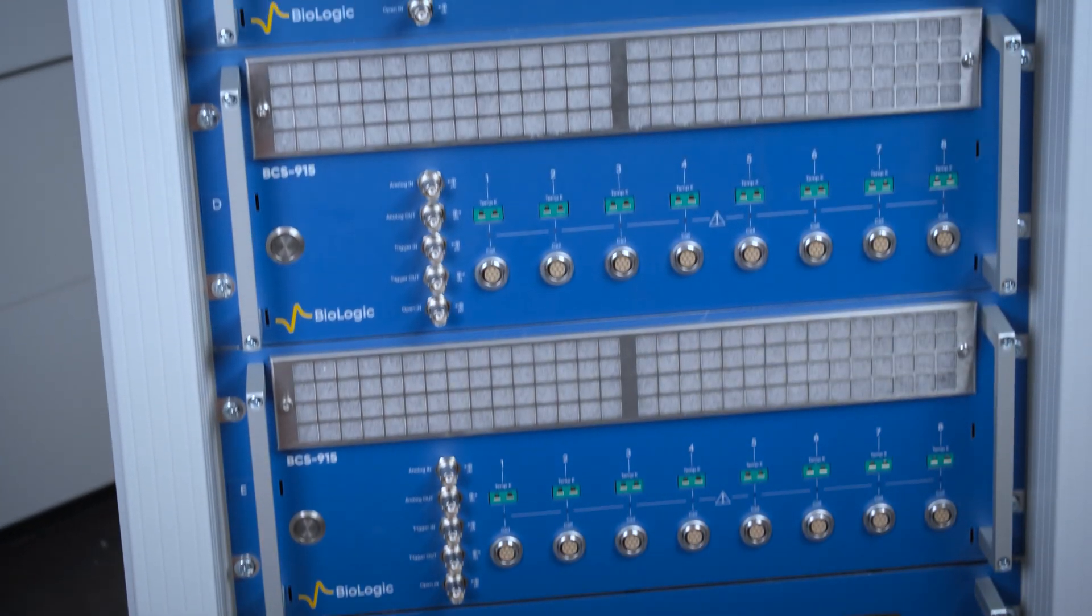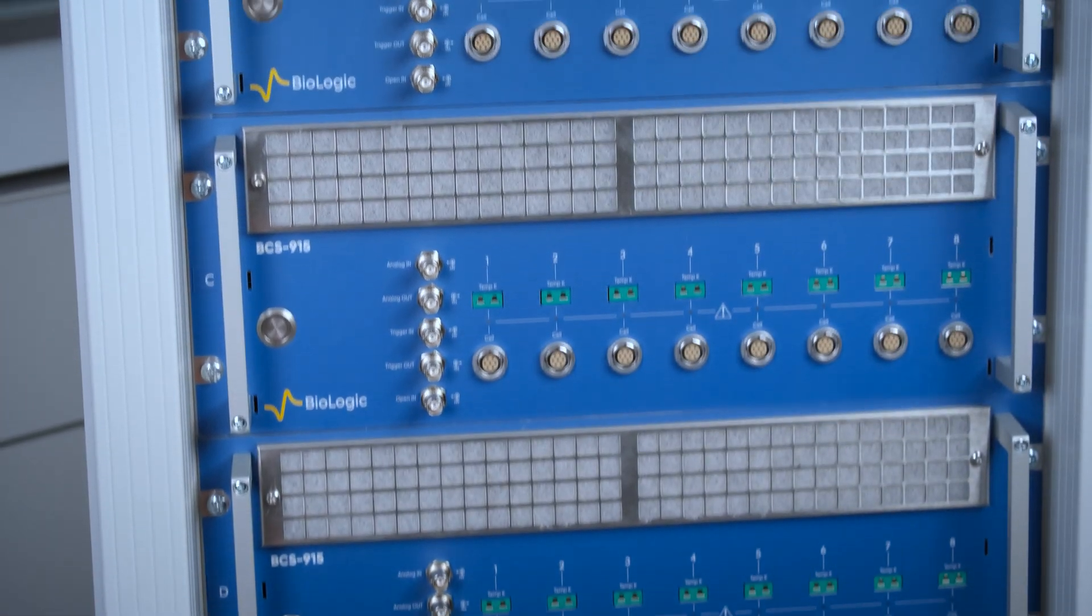The versatility of a battery cycler is also really important, and that's because as we saw earlier, batteries come in many different shapes and sizes and capacities, and researchers need to be able to adapt to their needs.